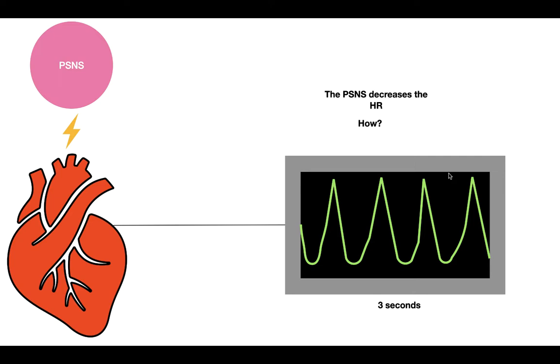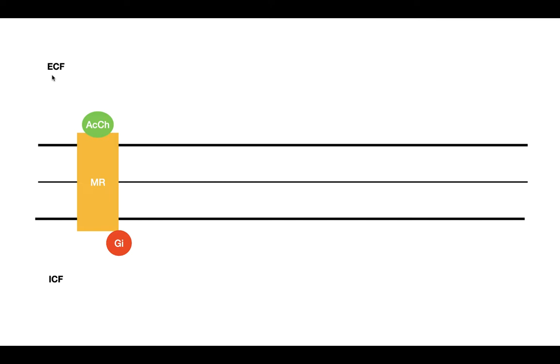But how is it going to decrease the heart rate? Well, the parasympathetic nervous system is going to decrease the heart rate in three ways. All the parasympathetic nervous system effects on the pacemaker cells of the heart are going to be through a muscarinic receptor. This muscarinic receptor on the heart is going to be a Gi protein. So when acetylcholine, the neurotransmitter of the parasympathetic nervous system, comes in, it will bind to the muscarinic receptor. In the meantime, before the muscarinic receptor is activated, we have adenylate cyclase.